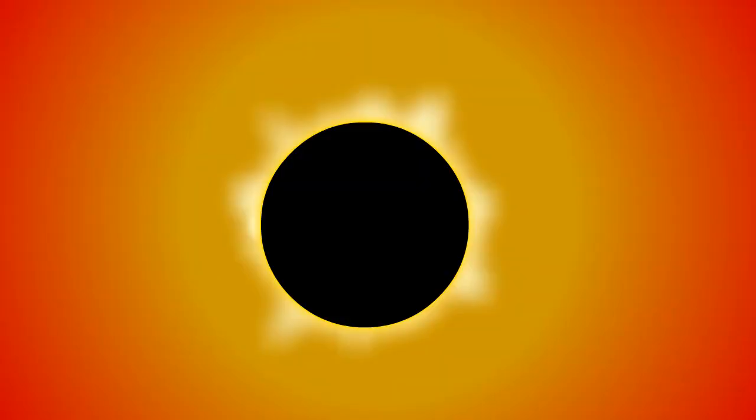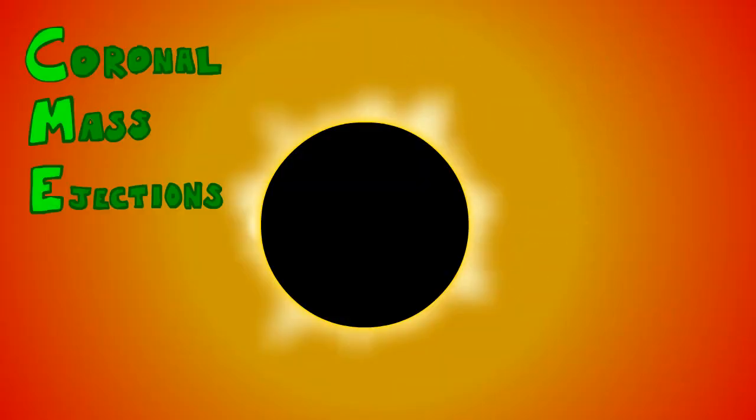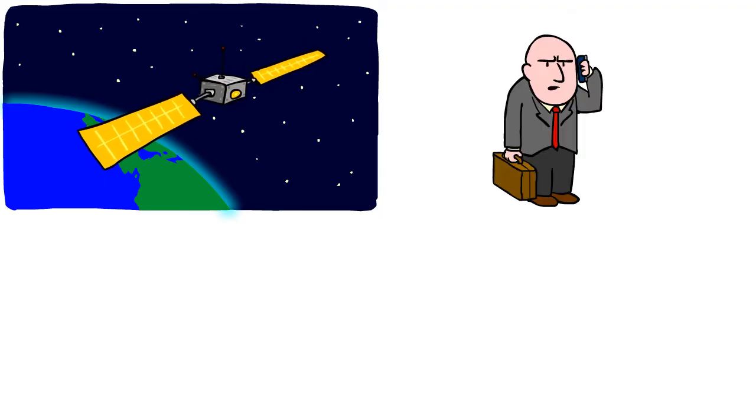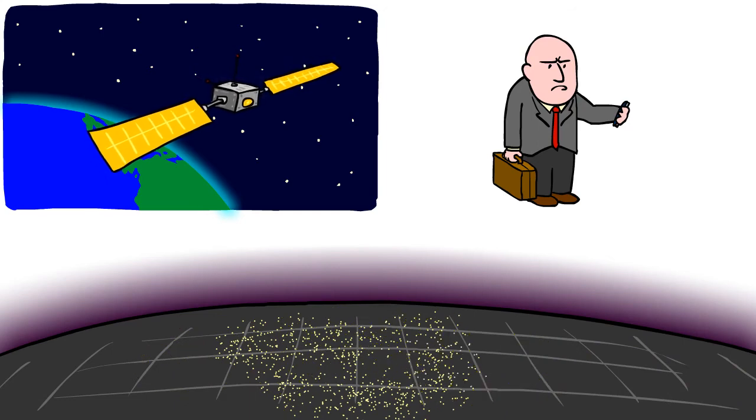But the Sun also produces coronal mass ejections, or CMEs. The big one can disrupt our magnetic field, interfere with satellites, communications, and in rare cases, even shut down power grids.